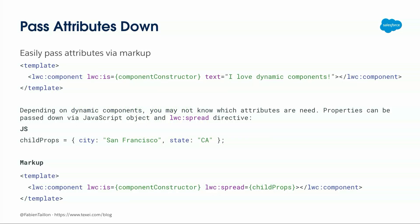One last thing: as with any component, even though it's dynamic, you can also pass properties down just like in markup. In most use cases you'll be switching between different potential components that may have different attributes. You can pass down a property object — like one containing city and state — and then using the LWC spread directive, the component will split your child property. It's as if you had city and state properties directly in the markup, but it lets you switch the type of attributes depending on which component you instantiate.